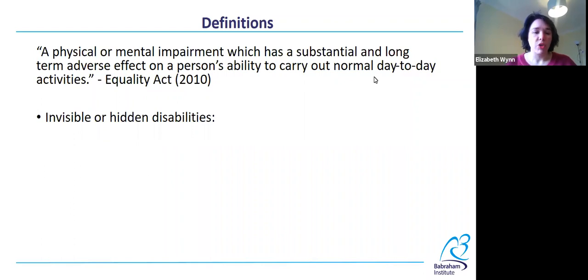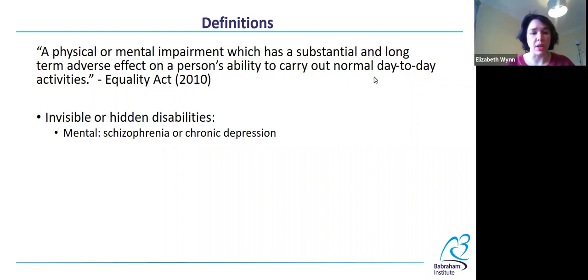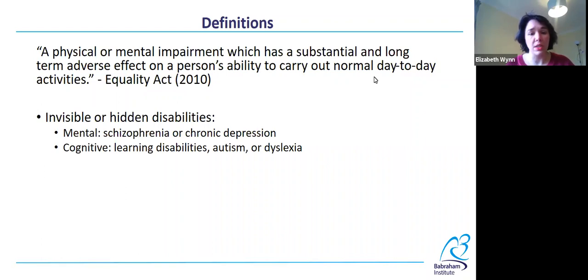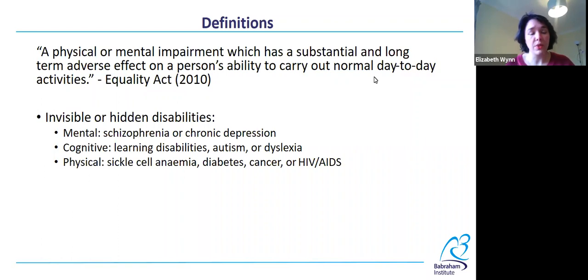Invisible or hidden disabilities can cover a range of categories. For example, mental disabilities like schizophrenia or chronic depression; cognitive disabilities such as learning disabilities, autism, or dyslexia; and also invisible physical disabilities like sickle cell anemia, diabetes, cancer, or HIV/AIDS. This isn't exhaustive at all — these are just a couple of examples.